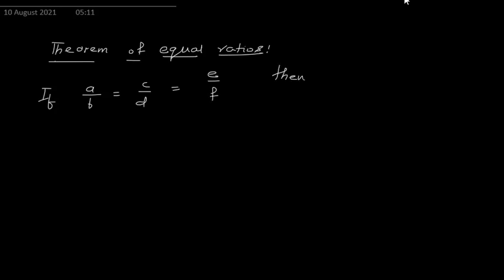Then in that case, in the numerator and denominator, we multiply and divide. Suppose this is equal to K, because these ratios are equal. Then K will also be equal to — if we multiply numerator and denominator by a single number, just by L, so LA divided by LB.